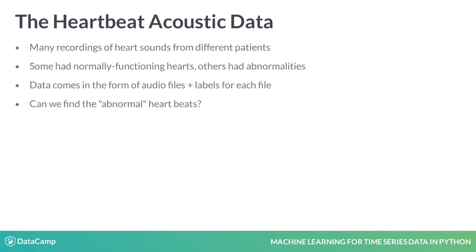Audio is a very common kind of time series data. Audio tends to have a very high sampling frequency, often above 20,000 samples per second. Our first dataset is audio data recorded from the hearts of medical patients. A subset of these patients have heart abnormalities. Can we use only this heartbeat data to detect which subjects have abnormalities?